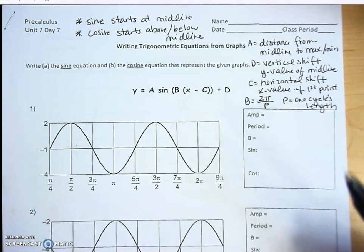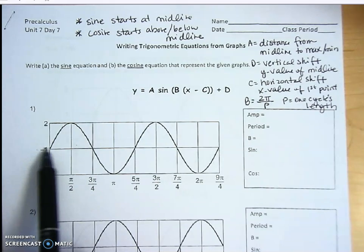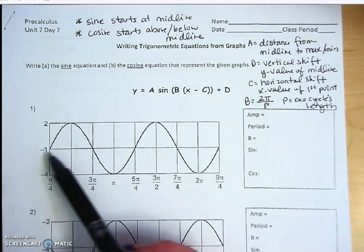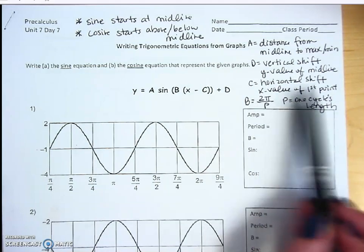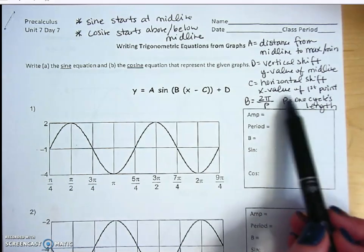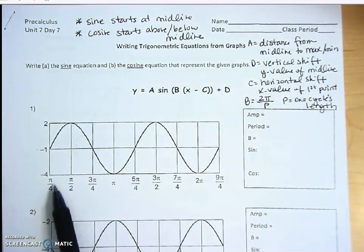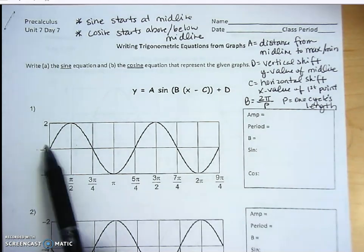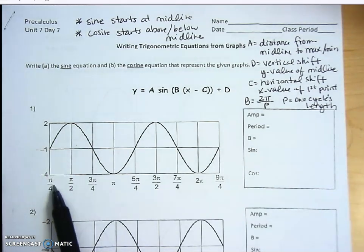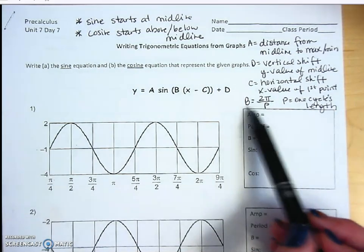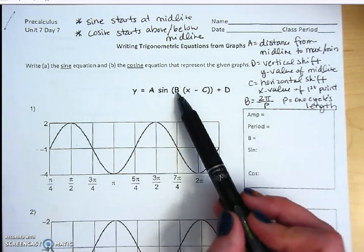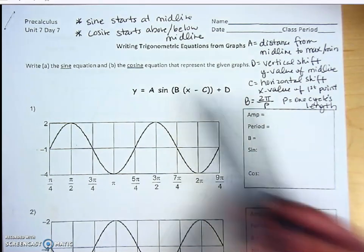D is the vertical shift of the graph, so that's going to be the y-value of our new midline. For example, we see this midline here and its value is negative 1, so the graph has shifted down to negative 1. C represents our horizontal shift left to right — it's going to be the x-value of the first point, because that's where the new zero-zero has shifted to, which is pi over 4.